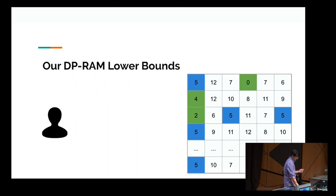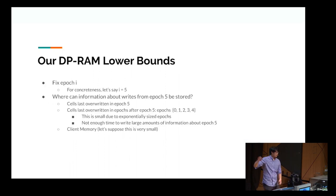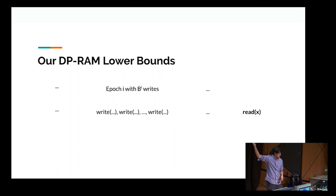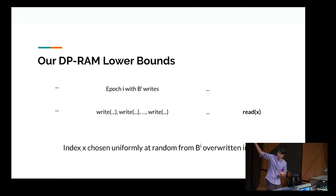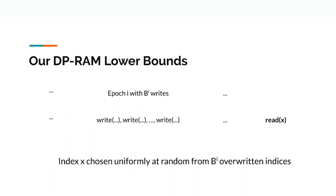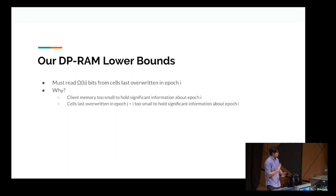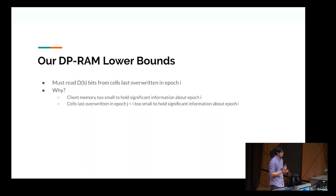There's also client memory — let's assume it's really small, constant or key-size. So the three exact locations where information about epoch 5 can be stored are: cells last overwritten in epoch 5, cells written in future epochs, and client memory. Two of these are really small. So if we have a read operation for some random variable x chosen uniformly at random from the b to the i indices overwritten in epoch i, this read operation must read omega(b) bits from cells last overwritten in epoch i. The other two locations are just too small — it only has about a 1 over log n probability of storing anything substantial about the right block.